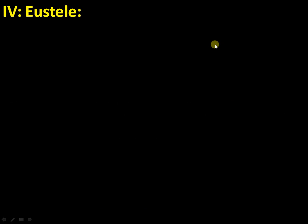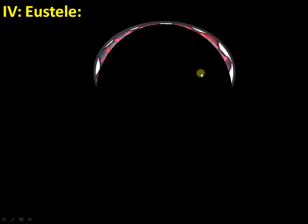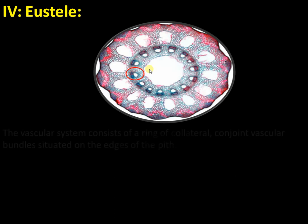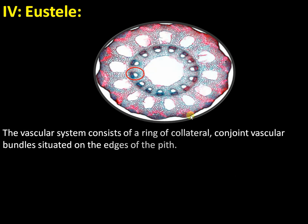The final type is the eustele. In the eustele, the vascular bundle arrangement is just like the vascular bundles of dicots and monocots, arranged in concentric rings. These vascular bundles are conjoint, collateral, and closed. This type of arrangement, similar to higher plants, is called eustelic arrangement and is seen in Equisetum stem.